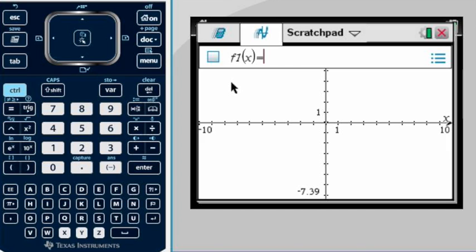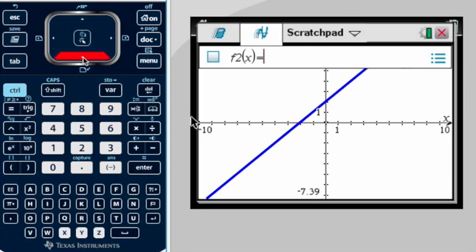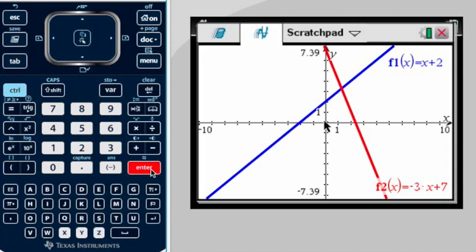We're going to go to graph and immediately it's going to ask us for an equation. The first example we're going to do is f1(x) = x + 2. I click down and my first equation will be graphed, and then I have space to write my second one, which is f2(x) = -3x + 7. After we press enter, we will see both equations.